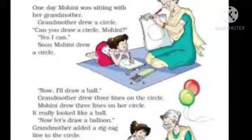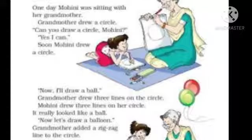One day, Mohini was sitting with her grandmother. एक दिन Mohini अपनी grandmother के साथ बैठी थी. Sitting means बैठना, grandmother means दादी. Grandmother drew a circle. Grandmother ने एक circle draw किया. Can you draw a circle Mohini? Mohini से पूछ रहे हैं, क्या तुम ये circle draw कर सकती हो? Yes, I can. Mohini कहती है, हाँ मैं कर सकती हूँ. Soon Mohini drew a circle. जल्दी से Mohini ने भी एक circle draw कर दिया.